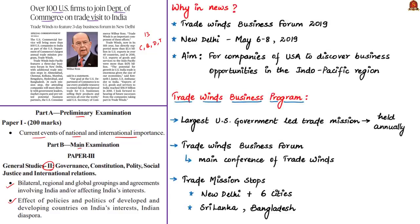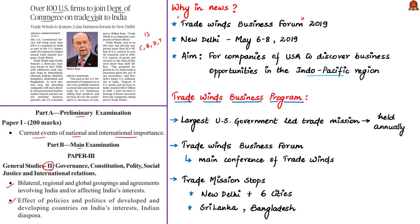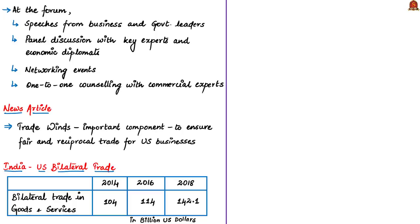This article is in news because the Tradewinds Business Forum is being held in New Delhi from May 6 to 8, with an aim to discover business opportunities for US companies in the Indo-Pacific region. The Tradewinds Business Program is the largest US government-led trade mission. The 11th annual mission is being conducted this year in India with a focus on the Indo-Pacific region. The program has two main components: the Business Forum — the main conference — and Trade Mission Stops, which are multiple business-related discussions held in Delhi and six other Indian cities, and also in Sri Lanka and Bangladesh.